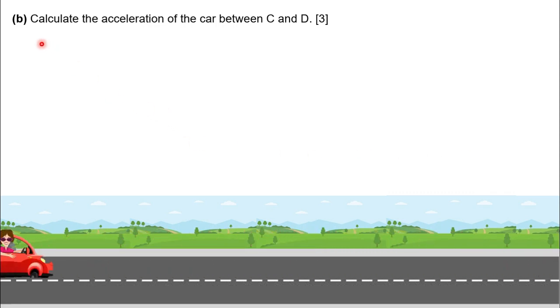See what they ask. Calculate the acceleration of the car between C and D. Here also, you have three marks. Same as our previous section, we can solve this by using two methods and you can choose one of them to practice.